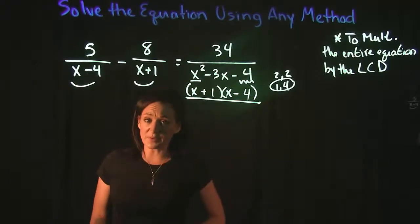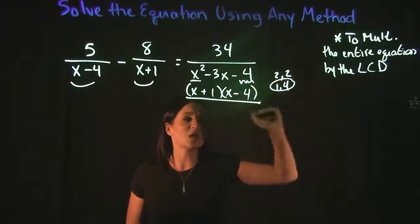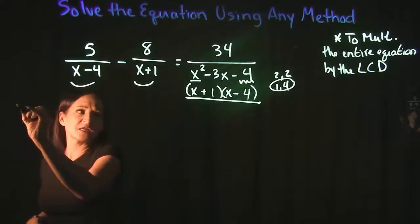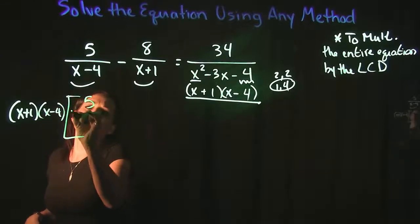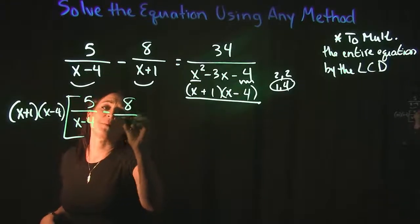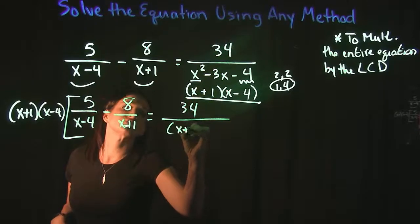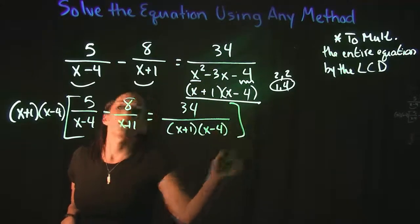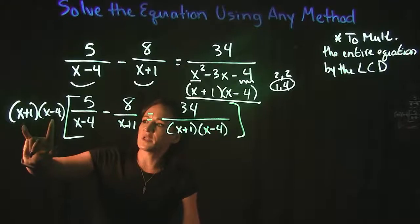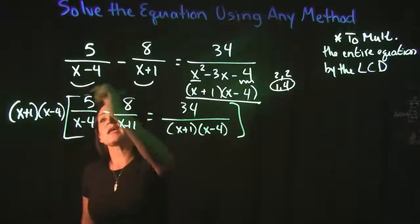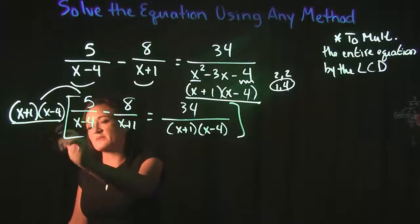So in order to try and simplify this problem, to make it easier to solve, again we want to multiply the entire equation by the lowest common denominator. What that's going to look like is I'm going to take x plus 1 times x minus 4, and I'm going to multiply my entire problem by that. So I'm going to rewrite this part here with my factored denominator instead. We're going to take this and multiply it to everything inside our equation. So first things first, x plus 1 times x minus 4 times the 5 over x minus 4. Think about this this way: x plus 1 over 1 times x minus 4 over 1 is getting multiplied to the 5 over x minus 4.